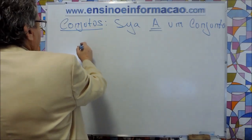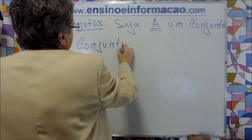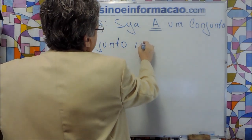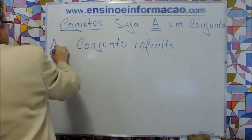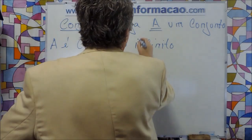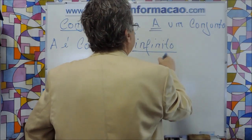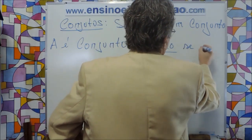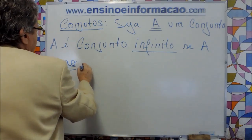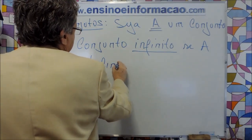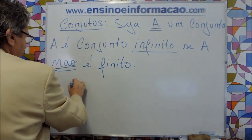Então, conjunto infinito. A é conjunto infinito — aqui é uma dicotomia: ou ele é finito, ou ele é infinito. Então, A é dito infinito se A não é finito. Exemplos de conjuntos que nós conhecemos que são infinitos.